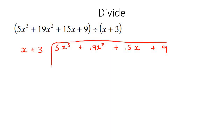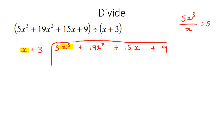What you do is you're going to look at the largest power over here and the largest power over here — that would be x³ and x, because that's to the power of 1. You are going to divide those two things by each other, so you're going to say 5x³ divided by x. That gives you 5x squared, so you're going to put that up at the top. Then what you're going to do is take this part and multiply it with this.